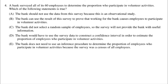Let's take a look at the first multiple choice question. A bank surveyed all of its 60 employees to determine the proportion who participate in volunteer activities. Key thing here — they were looking at all their employees, which means they did a census. Option A says the bank should not use the data because it's an observational study. No — observational studies are great. All they were trying to figure out was what proportion participate in volunteer activities, so that has nothing to do with it. Option B says the results prove that working for the bank causes employees to volunteer. Absolutely not — they were not doing an experiment where they could show A causes B.